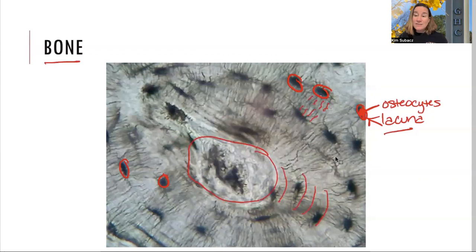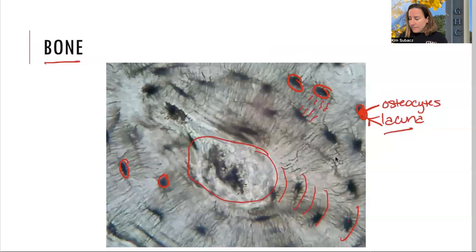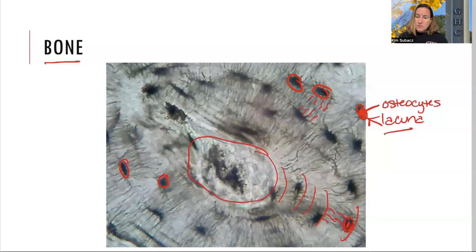We also have lamellae — little rings. When I'm looking at compact bone, I think it looks like a tree trunk, because tree trunks have those annular rings. So we've got lamellae, that's the lacunae, and inside the lacunae is a little osteocyte. Connecting the little lakes are the canaliculi that connect each one to each other through these little rings. That is compact bone.